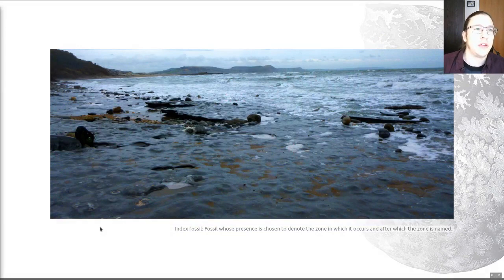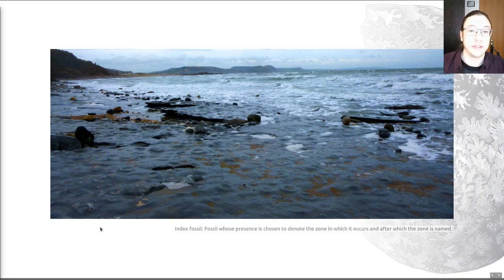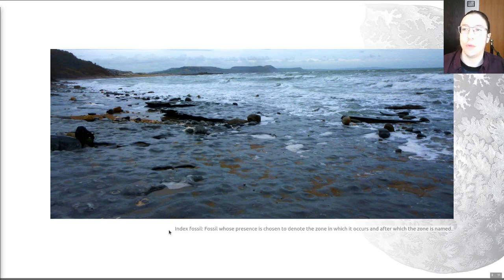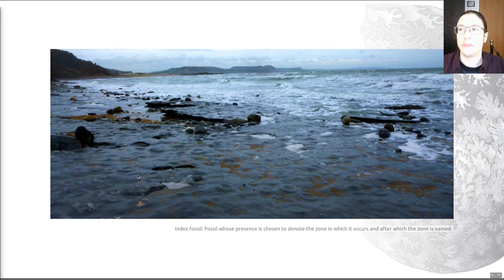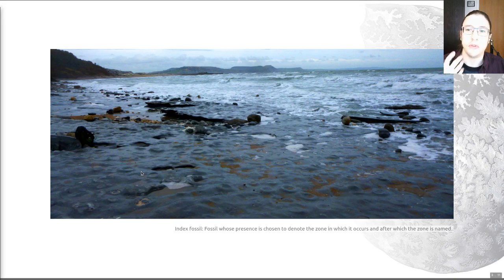Finally — point number five — what we want in a good index fossil is high abundance. We want lots of these things; this makes it more likely that you'll find one when conducting a study, and makes them a quicker and easier tool for biostratigraphy. Because of ammonites' high preservation potential, this is generally true — they are quite abundant. The example here is the Blue Lias rock layer from Dorset: if you look at the rock you can see all these circular round structures, and each one of those is actually a fossil ammonite. It's packed full of these creatures — an example of one concentration bed, but also representative of how abundant ammonites are across a variety of rock types.